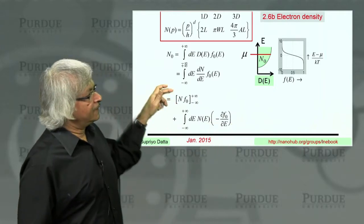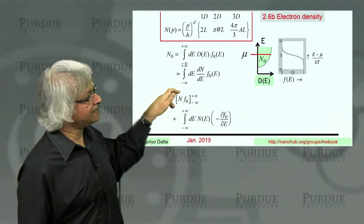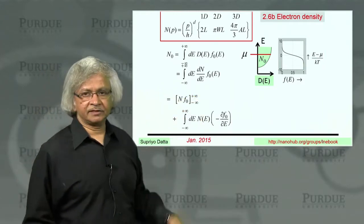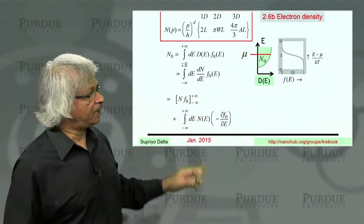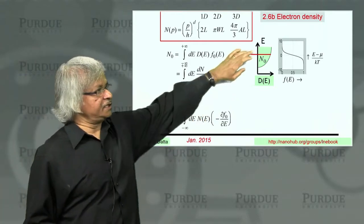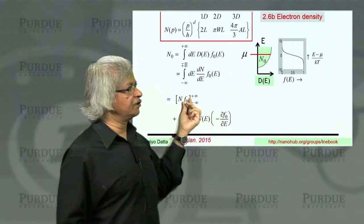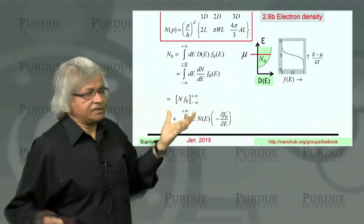Now, this term is zero. Why is that? Well, look at the two limits. Consider first the positive infinity. Well, positive infinity means very large energy. That's where you can see the Fermi function is zero. So F0 is zero.